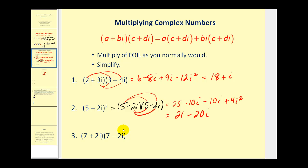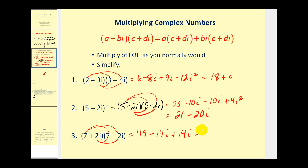This last product is a special product called the product of complex conjugates. Notice the terms are the same — one's a sum and one's a difference. We have seven plus two i and seven minus two i. The product of these two complex numbers should be real. Seven times seven is forty-nine, and the imaginary parts are opposites, so those have a sum of zero. Since i squared is negative one, negative four times negative one is positive four, and four plus forty-nine is equal to fifty-three.